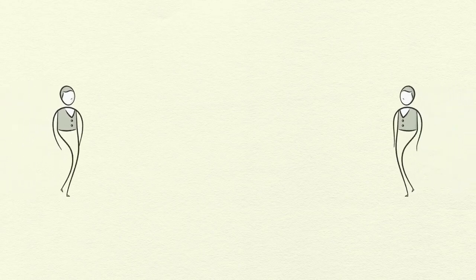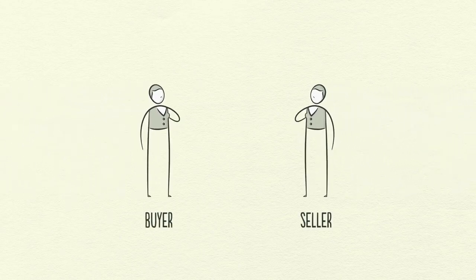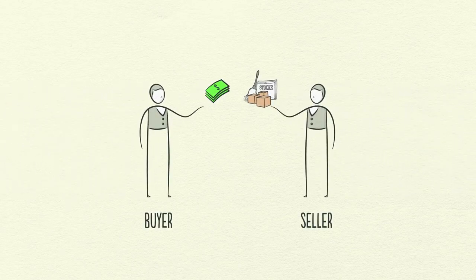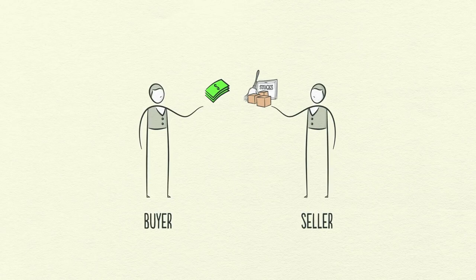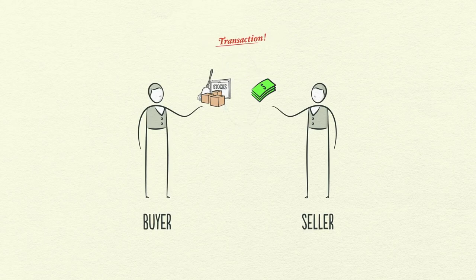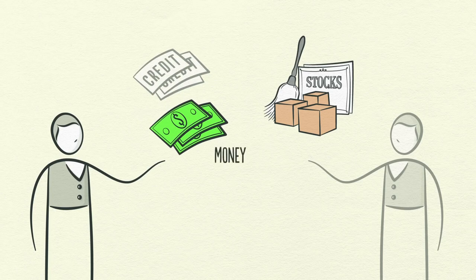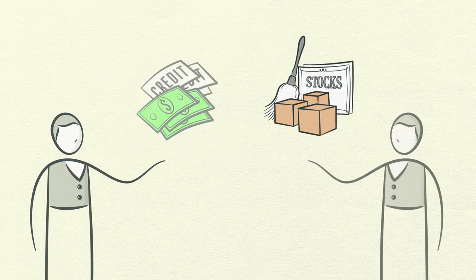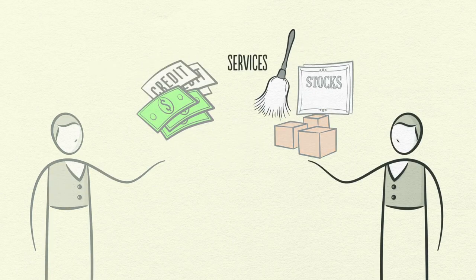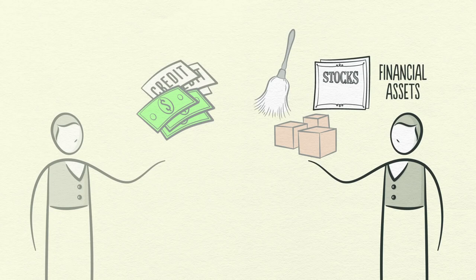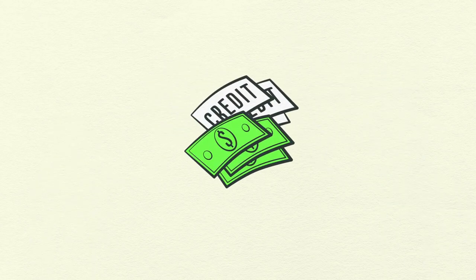An economy is simply the sum of the transactions that make it up and a transaction is a very simple thing. You make transactions all the time. Every time you buy something, you create a transaction. Each transaction consists of a buyer exchanging money or credit with a seller for goods, services, or financial assets.